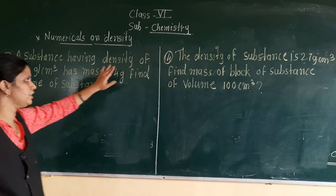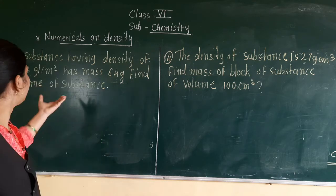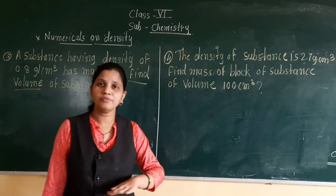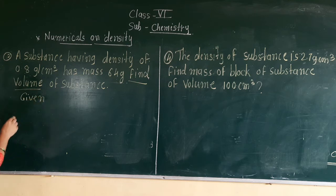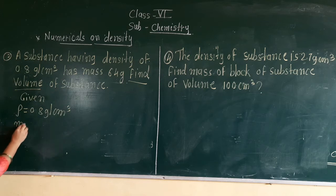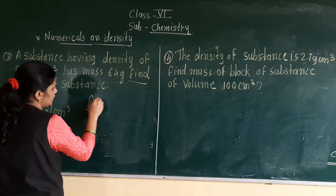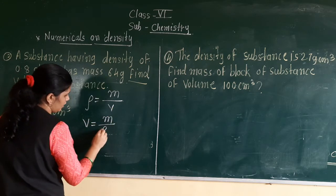Third example: a substance having density of 0.8 gram per cm cube. In this example, density and mass are given. We need to find the volume of that particular substance. Given: density is 0.8 gram per cm cube, and mass is 64 gram. We have to find out the volume. The formula is: density equals mass divided by volume, so volume equals mass divided by density.